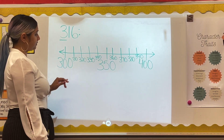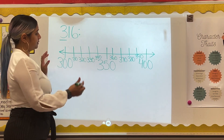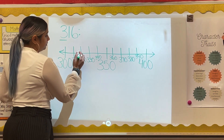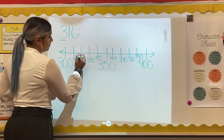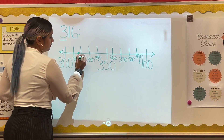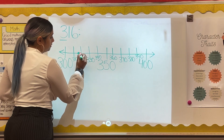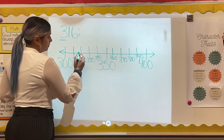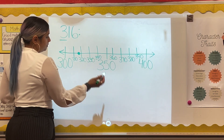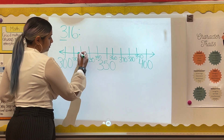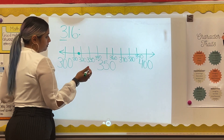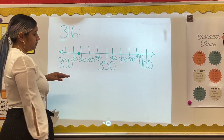Now we need to mark the number we are rounding on the number line. This number is 316, so I will make a mark in between the first and second tick mark on the number line because this is about where this number would be.